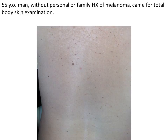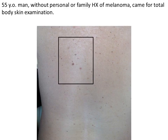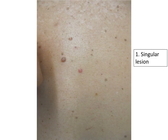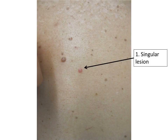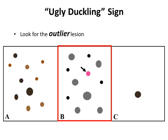Let's review a few cases that exemplify this process. This is a 55-year-old man without prior history of melanoma. Do you see an obvious ugly duckling on the back, or do you see any deviant lesion? Let's focus on this area. There is a singular lesion — a red papule. None of the patient's back lesions or other body lesions looked exactly like it.